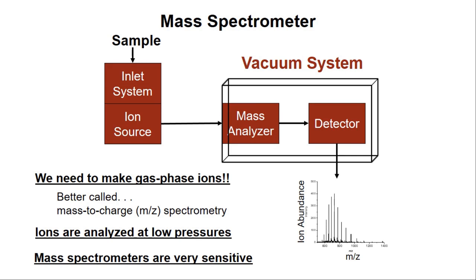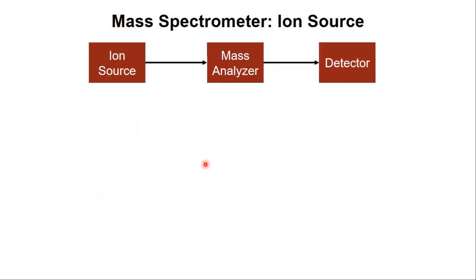In effect, mass spectrometry has three main components: an ion source, a mass analyzer, and a detector. I'm going to mostly focus on how the mass analyzers work, the very different ones. But I do want to say a few words about ion sources and detection.